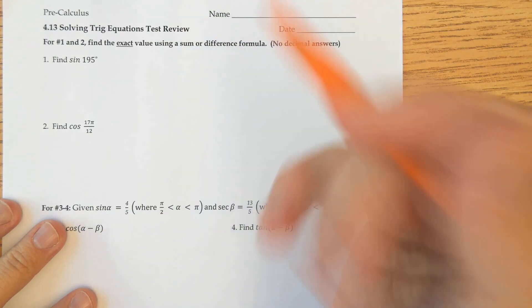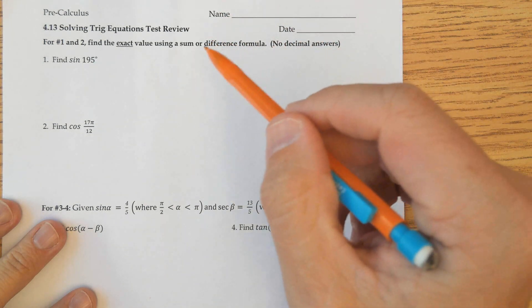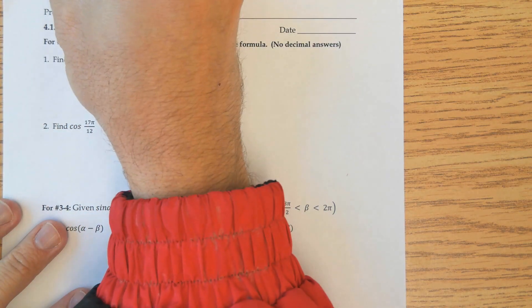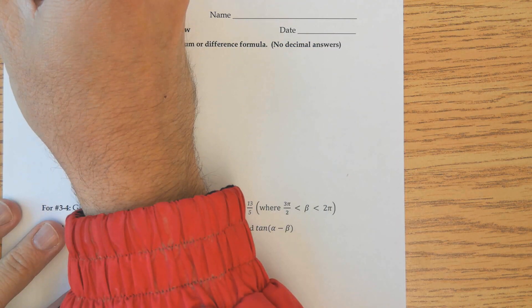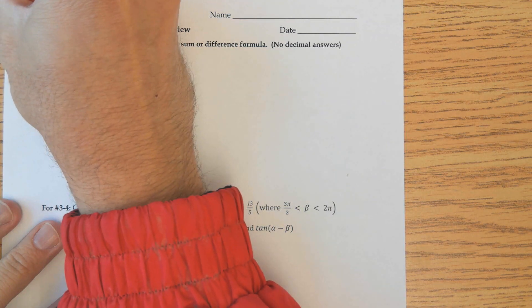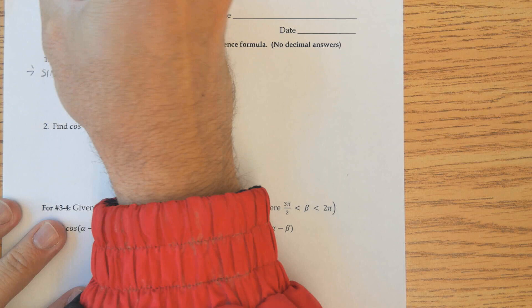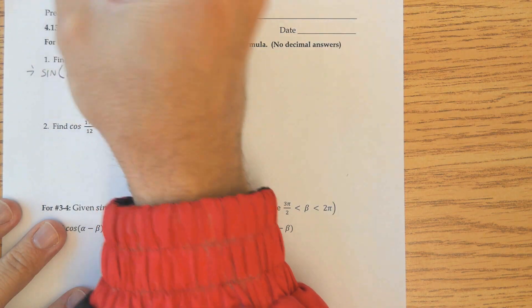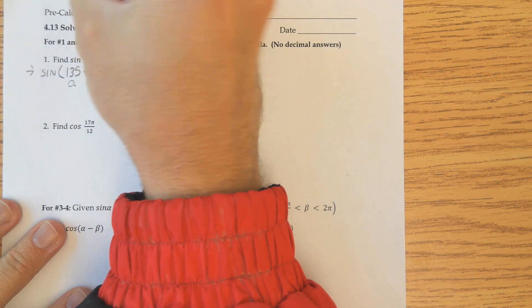Please make sure on your formula sheet that you have your identities, your unit circle, and your Pythagorean triples. The two angles I'm going to use that add up to 195 are sine of 135 plus 60. So that means little a is going to be 135, big B is going to be 60.